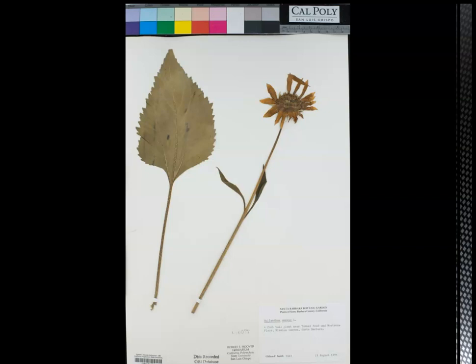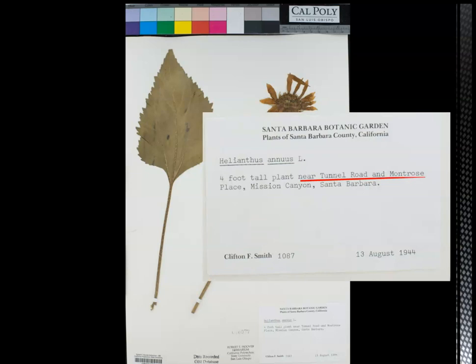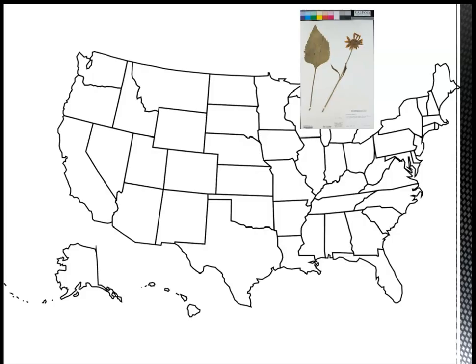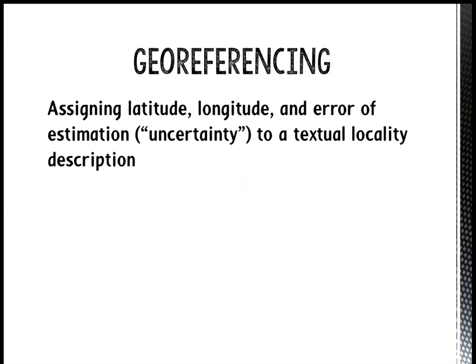When an herbarium specimen is collected, the collector usually records where they found the specimen. This information is stored on the specimen label with most of the other collection data. Sometimes the specimen label includes latitude and longitude coordinates, but because specimens have been collected over the past couple hundred years, this is not always the case. As a result, many specimens have location data, but we aren't able to place that specimen's location on a map or use it for other computerized analyses. That's where the process of georeferencing comes in.